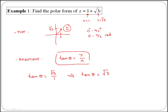Remember, this is called a trigonometric equation because the unknown is inside a trigonometric ratio. In order to get theta, we have to ask ourselves which angle has tan equal to the square root of 3.